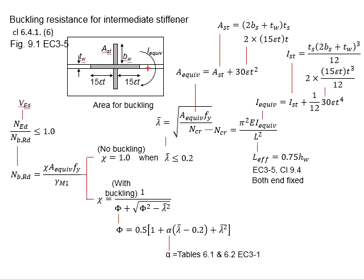In determining the critical Euler force, the L-effective is determined as 0.75 height of the web. It is in reference of clause 9.4 of EC3 part 5, where both ends are considered fixed due to the welding of the stiffener to the girder.